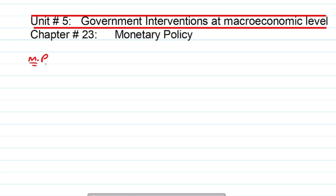If the central bank uses expansionary monetary policy, then what will happen to aggregate demand in the economy, economic growth, real GDP, price level, and employment as well. Then we will look into the contractionary policy and its graphical representation as well.